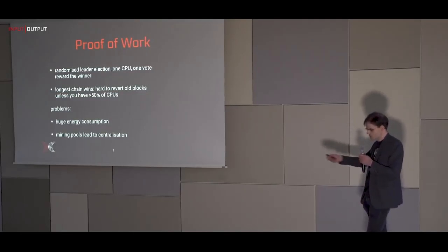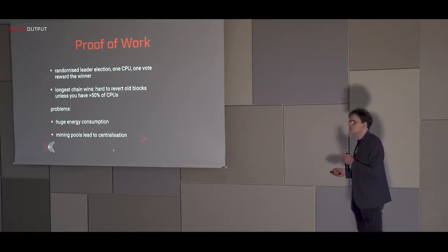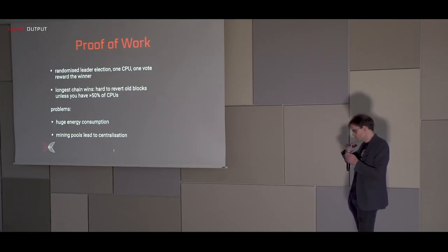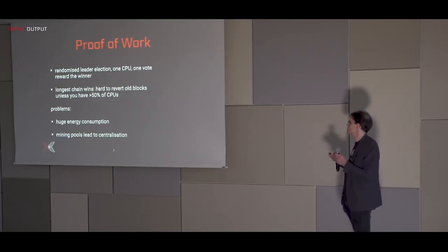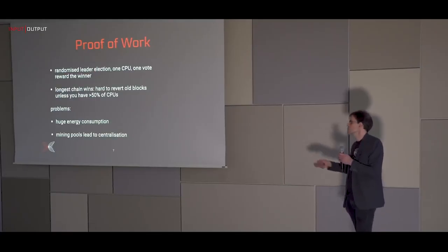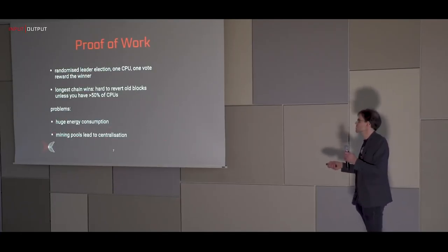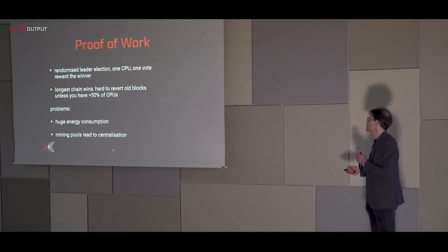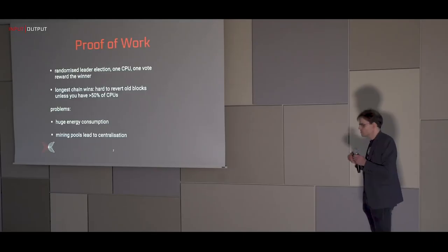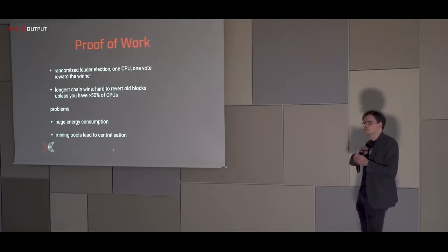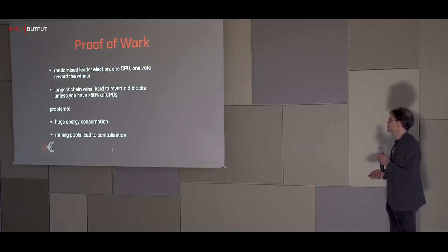Proof of Work is also hard to scale to higher transaction rates. Because the race is winner-takes-all — everyone else who was busy solving the puzzle has to start on a new one — people form mining pools to maximize their chances. Those pools lead to centralization, undermining the whole point of a cryptocurrency, which is trust from a large collective rather than a handful of authorities.